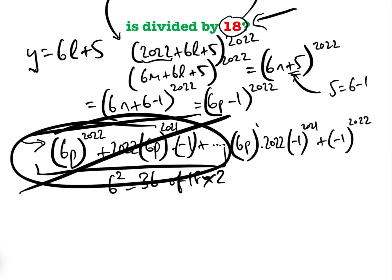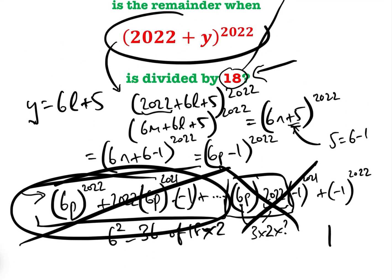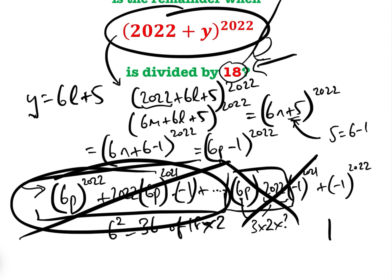We only need to bother with the last two terms. So we have 6p × 2022 × (-1). Well, 2022, we know, is a multiple of 6. So we know that it's 3 × 2 × something. And so therefore, we know this term is equal to 6 × 3 × 2 × something, which is 18 × 2 × something. So this is also a multiple of 18. So the only bit that we need to bother with is (-1)^2022, which we know is 1. And so therefore, the remainder when this is divided by 18 is 1.